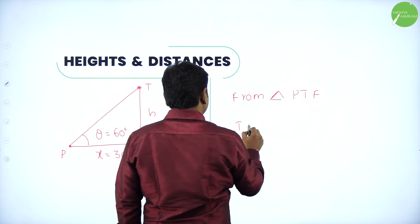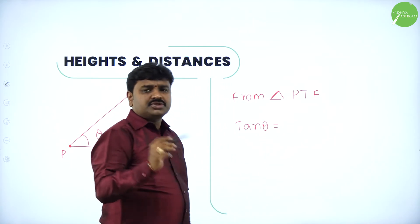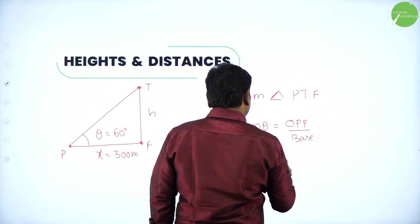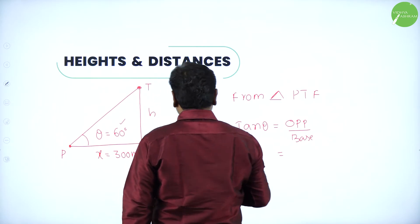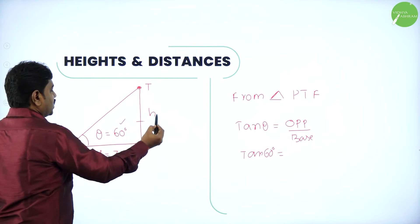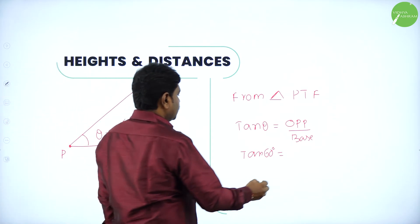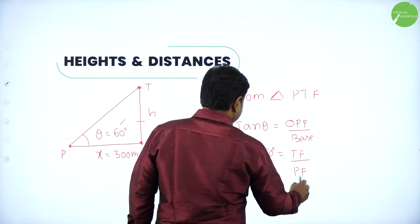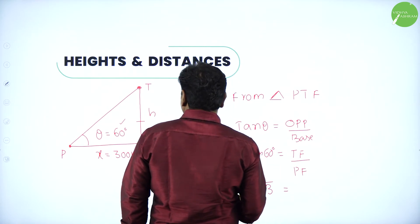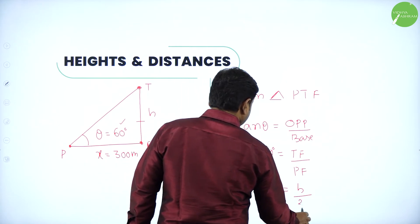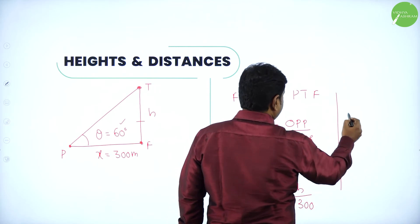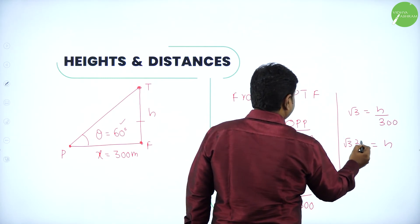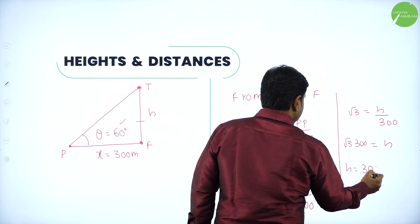Let us consider tan theta. What is tan theta? Opposite side by base. Here, tan of theta — what is theta given? 60 degrees. Opposite to the angle theta is TF, and adjacent is the base, which is PF. You know the value of tan 60 — tan 60 is root 3. TF is height H and PF is 300. So we get root 3 equals H by 300. Rearranging, H equals root 3 into 300. Therefore, H equals 300 root 3 meters.